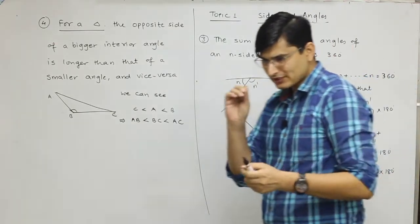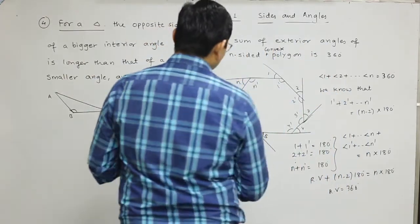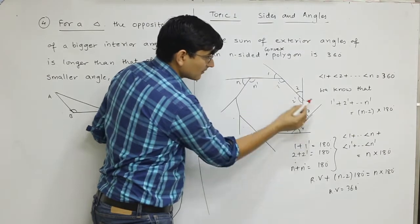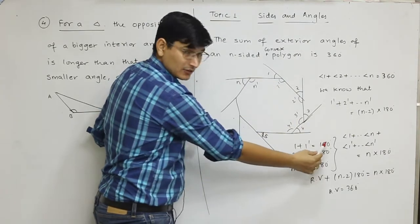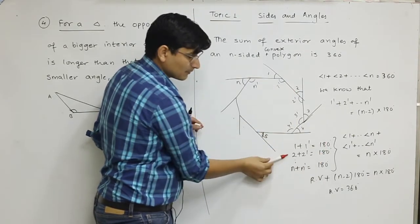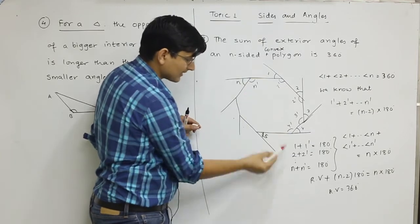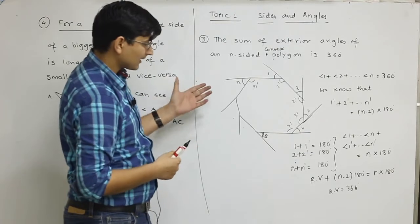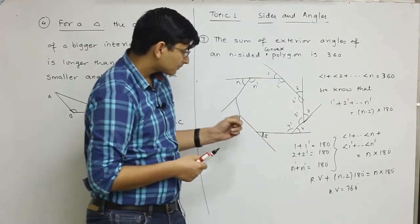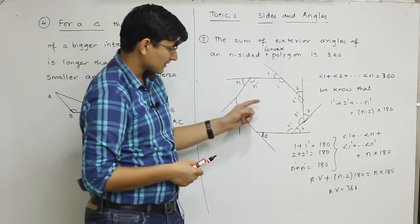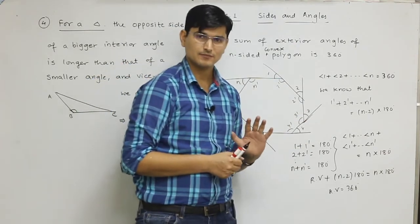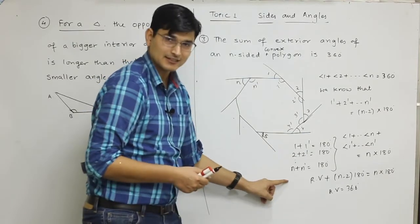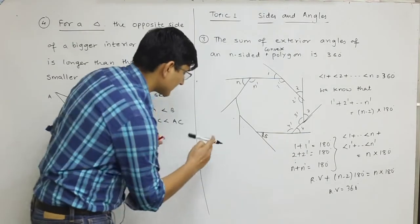We have to prove that 1, 2, 3 up to n equals 360. If you look carefully, you'll notice that 1 and 1' sum to 180, 2 and 2' also sum to 180. Similarly, n and n' sum to 180. And we saw earlier that 1', 2', 3' etc. sum to (n-2)×180.